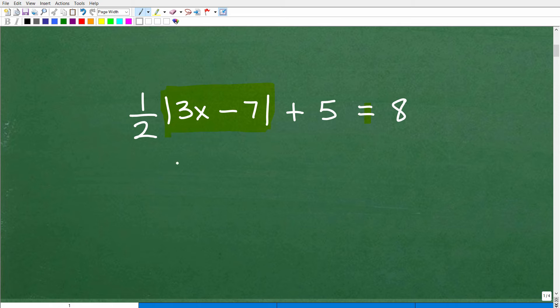All right. So, again, just think of this as some sort of variable, something like Y, and just think through the steps you need to do to isolate this part of the equation.